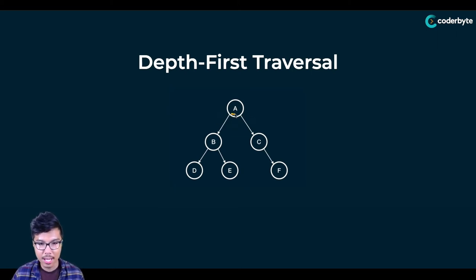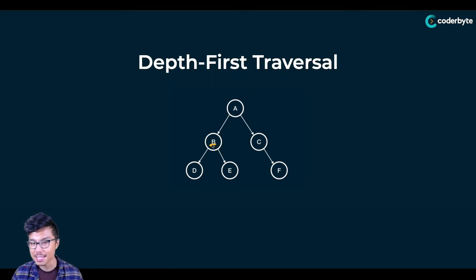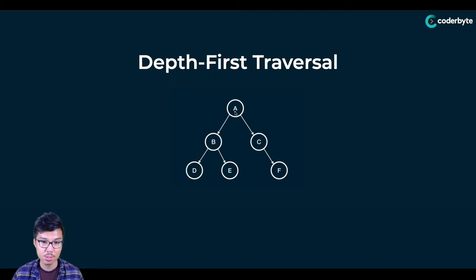We'll start at the root node A. It's very characteristic of a depth first traversal that you travel as deep as you can to a leaf before you move laterally through the tree. So I start at A, then hit B, and before I go across to hit C, I go deeper and hit a node like D. A proper depth first traversal starts with A, B, D.